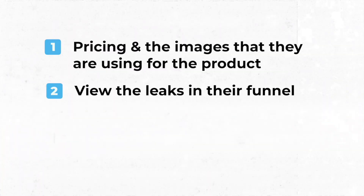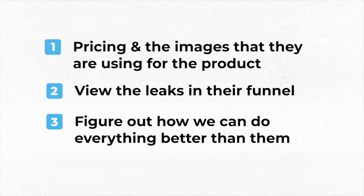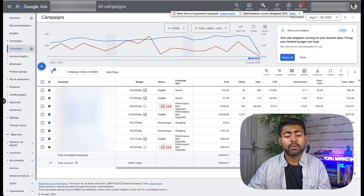Number three: I spy on my competitors to figure out how we can do everything better than them. That's simply it — just three main reasons you should even be spying on your competitors. If none of these apply to you, don't waste your time spying. You have better things to do, like running your ads better or making your own funnel better. Now let's start talking about how to spy on them the right way.